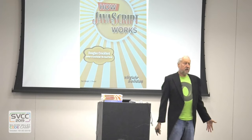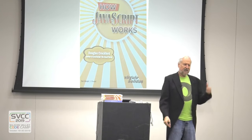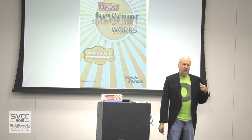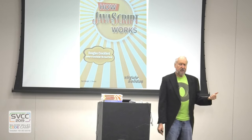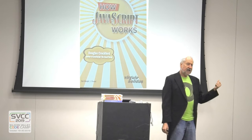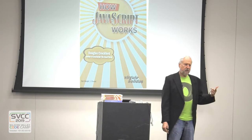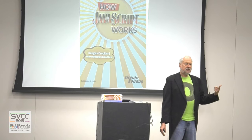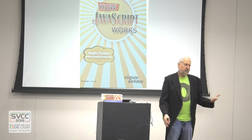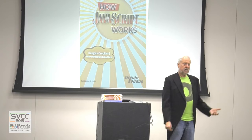json.org is still me and all it does is maintain that one-page website. The standard for JSON is managed by ECMA and ISO. There is no plan on changing that specification. Jason's done. If you want something better, make something better.